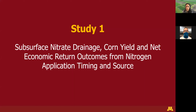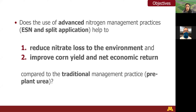Moving on to the first study, the title of this first part of my overall project is 'Subsurface Nitrate Drainage, Corn Yield, and Net Economic Return Outcomes from Nitrogen Application Timing and Source.' The objectives of this study were to evaluate if the use of advanced management practices such as split application and the use of ESN would reduce nitrate leaching losses and improve corn yield and net economic return compared to the traditional nitrogen management practice — the application of urea at pre-plant.